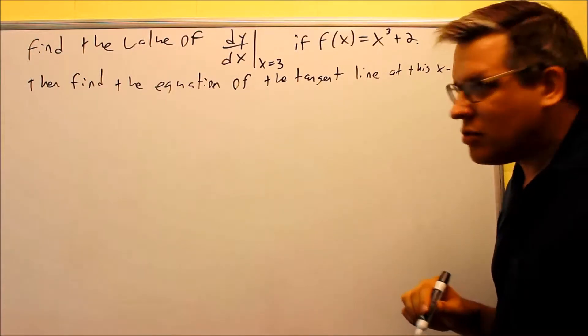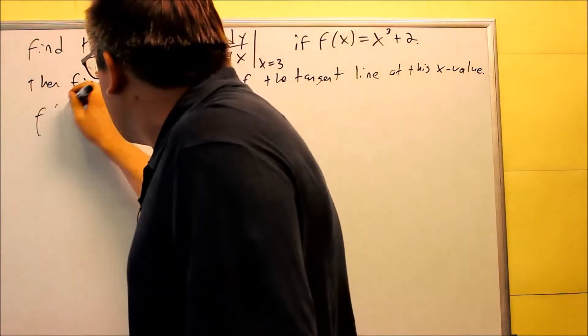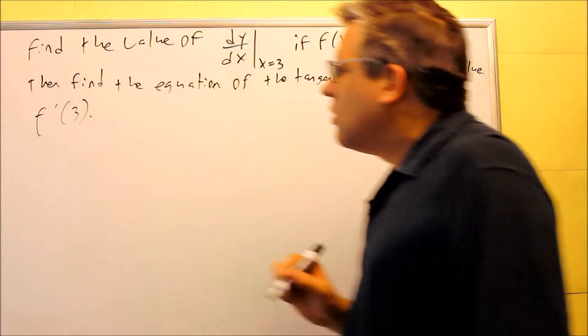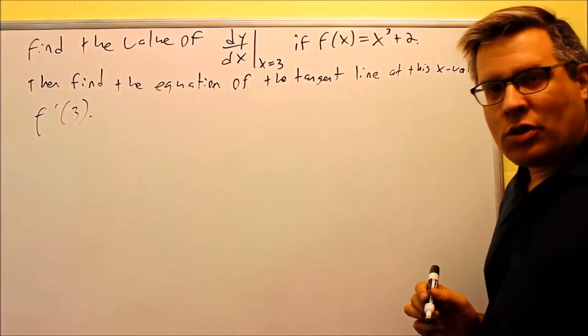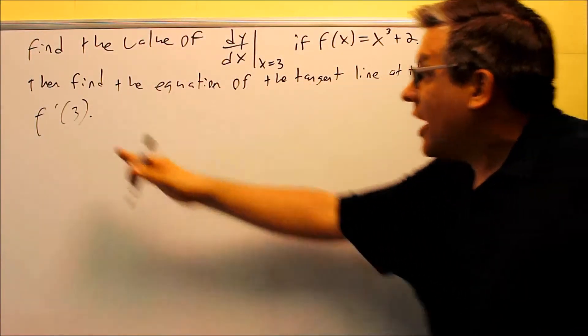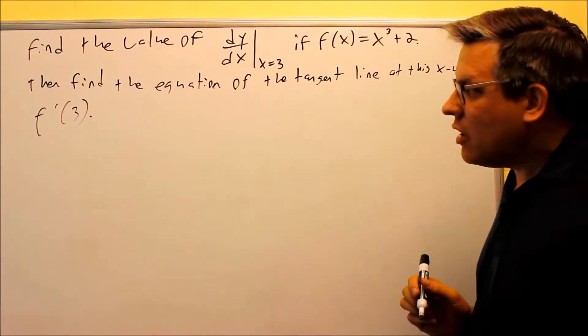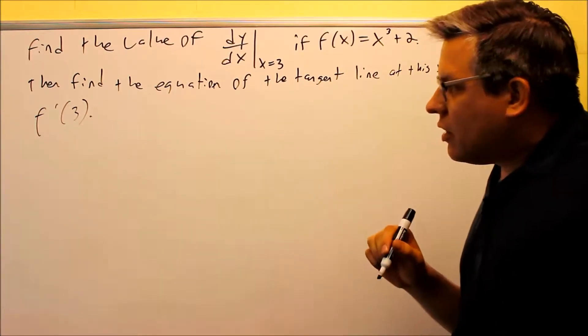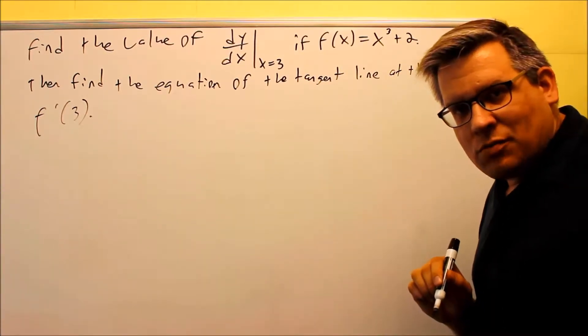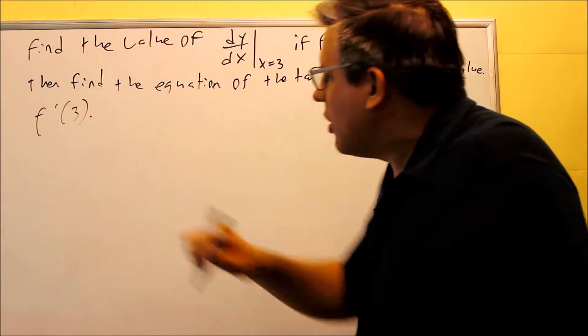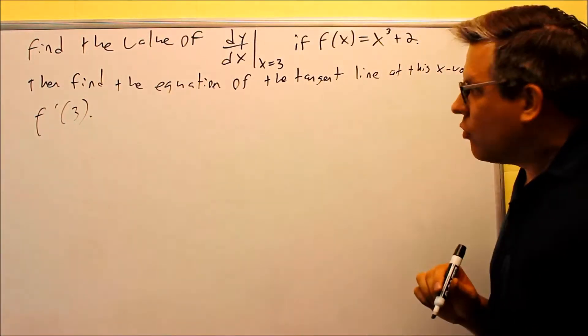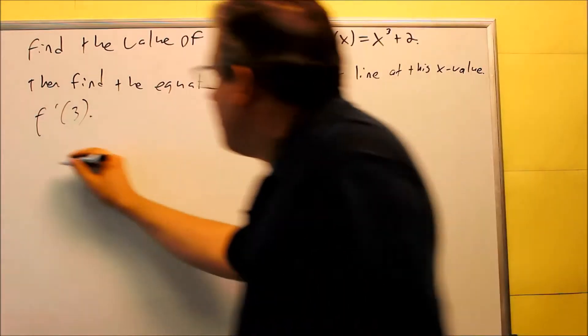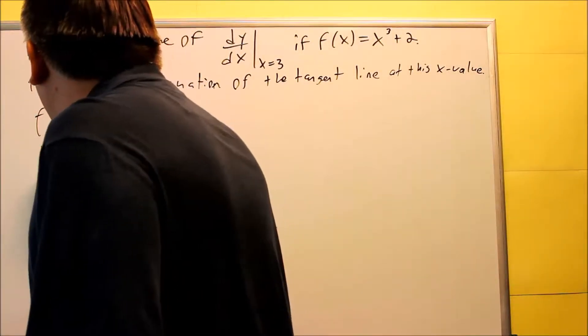So what is it that we're actually doing here? It's actually asking you to find this: they want you to find f prime of 3. Then it says they want you to find the equation of the tangent line at that x value of 3. I can either go through the whole limit process, or since they give me a number, I can actually go through this numerically like I did before in a previous section.